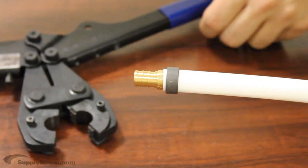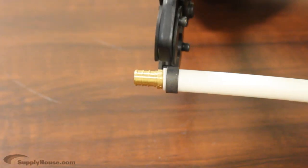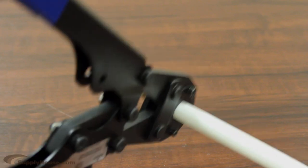Insert the crimp fitting and place the jaws of the tool squarely over the ring. Squeeze the jaws together around the ring to secure the connection.